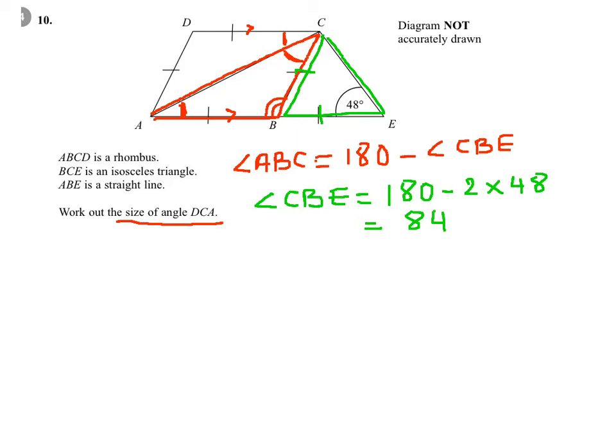So, CBE is 84, this means that angle ABC would equal 180 take away 84, which is equal to 96.